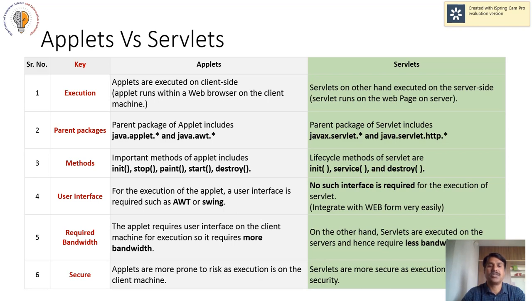As far as the lifecycle of applet is concerned, it contains five methods: init, stop, paint, start, and destroy. Whereas for servlet, the lifecycle contains three important methods: init, service, and destroy.